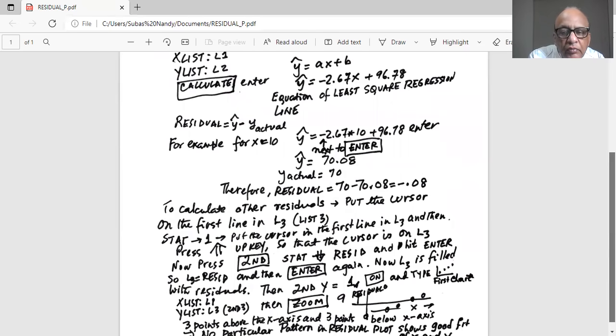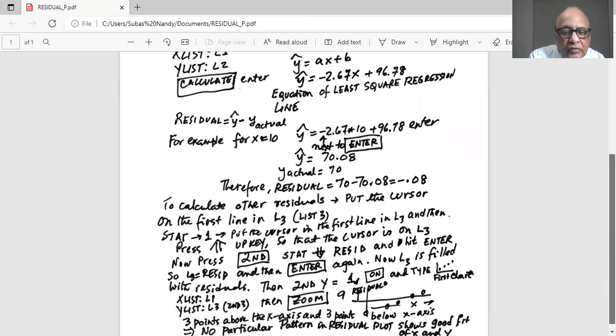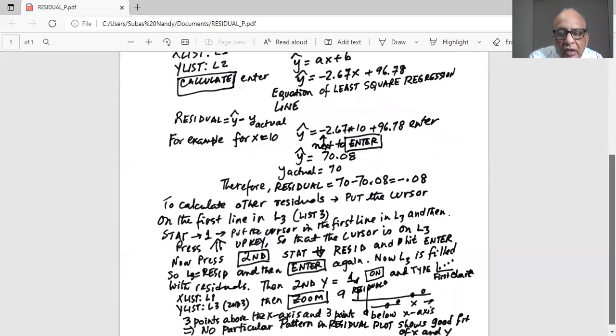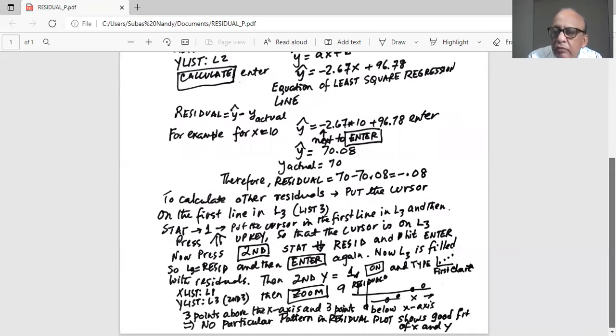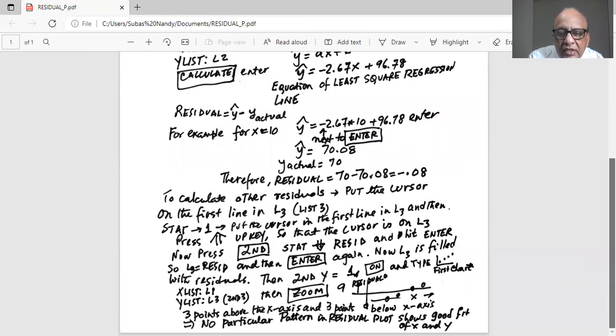And then the type, we will select the first type of chart. We have to be careful. The X list below that thing will be L1 and Y list should be L3 because I want to plot L3, which is the residual versus X, which is in L1. So if you do this for this problem, you will see there are three points above the X axis and three points below the X axis.